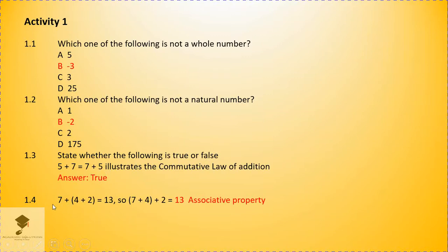Now, let's move on to the next one. 1.4. 7 plus, open bracket, 4 plus 2, close bracket, equals 13. So, 7 plus 4, close bracket, plus 2, will be equal to 13. And this is associative property.